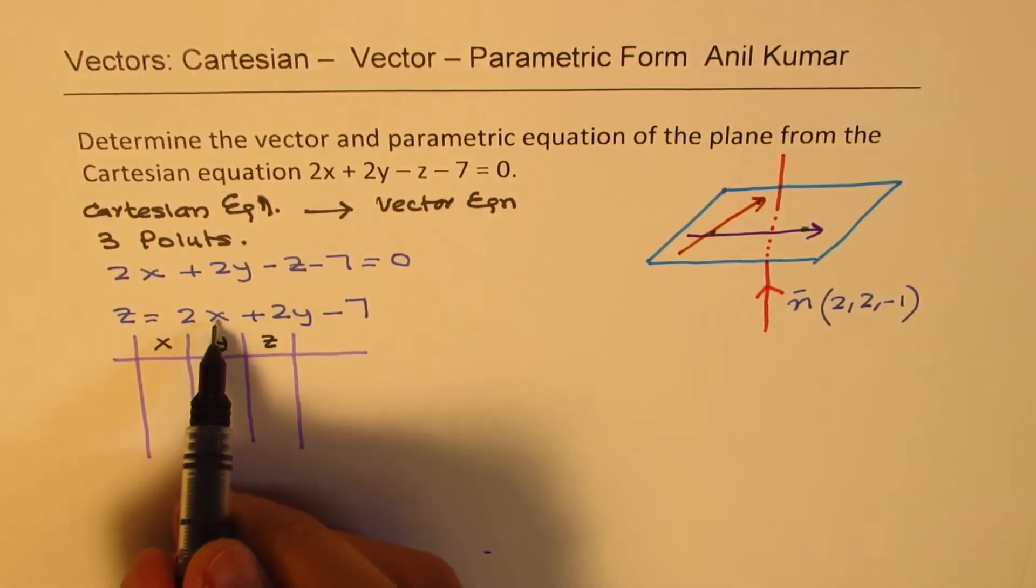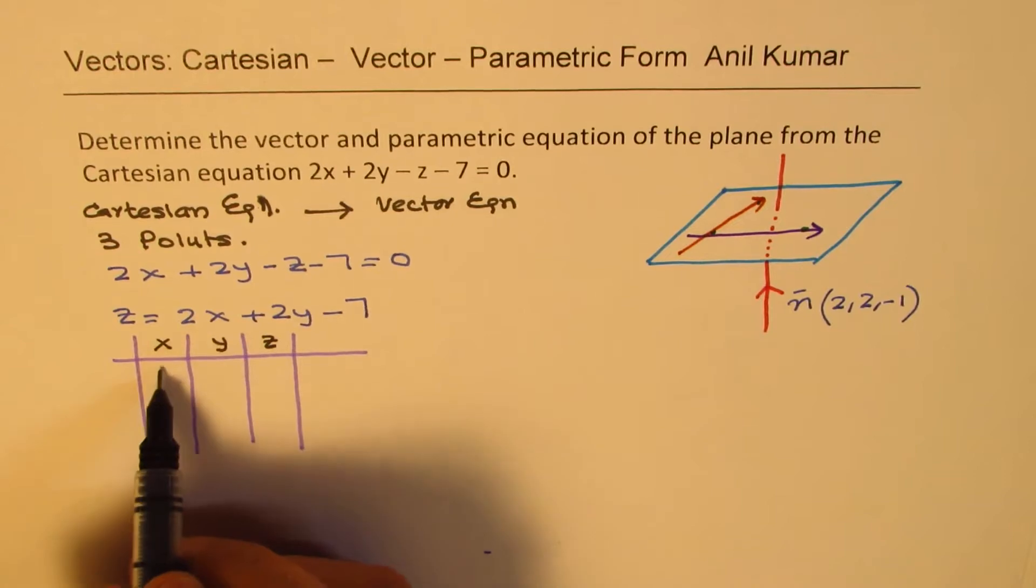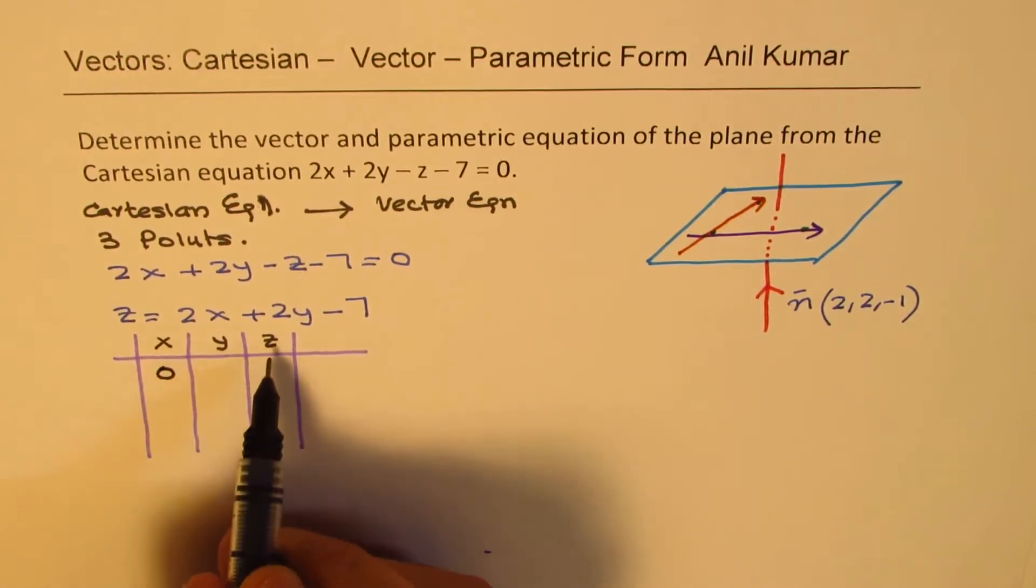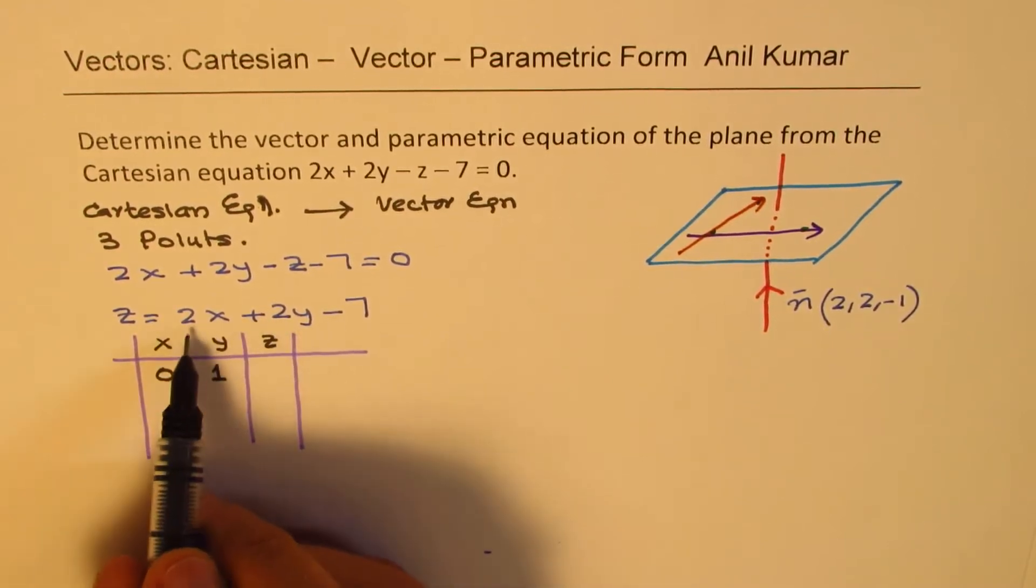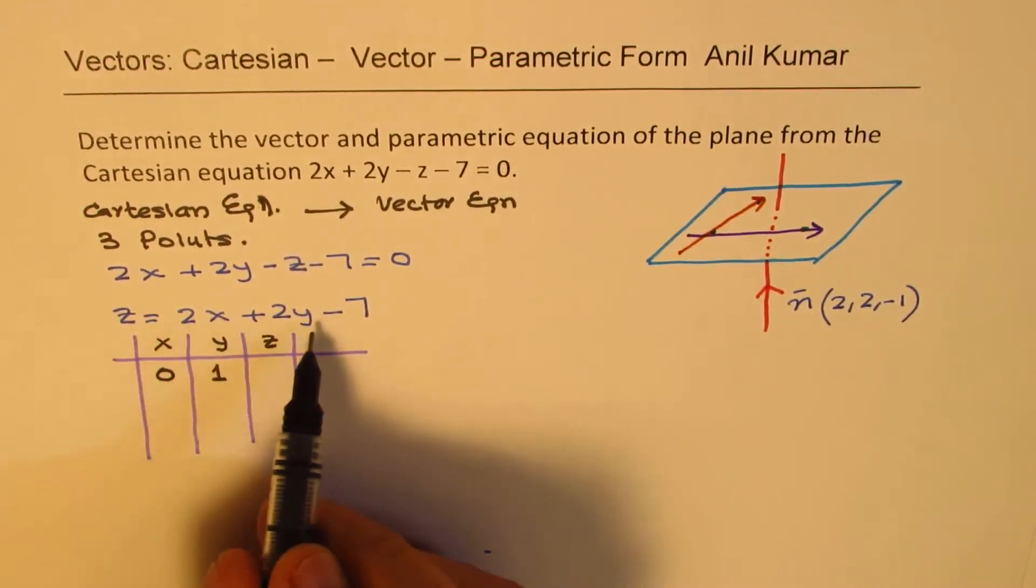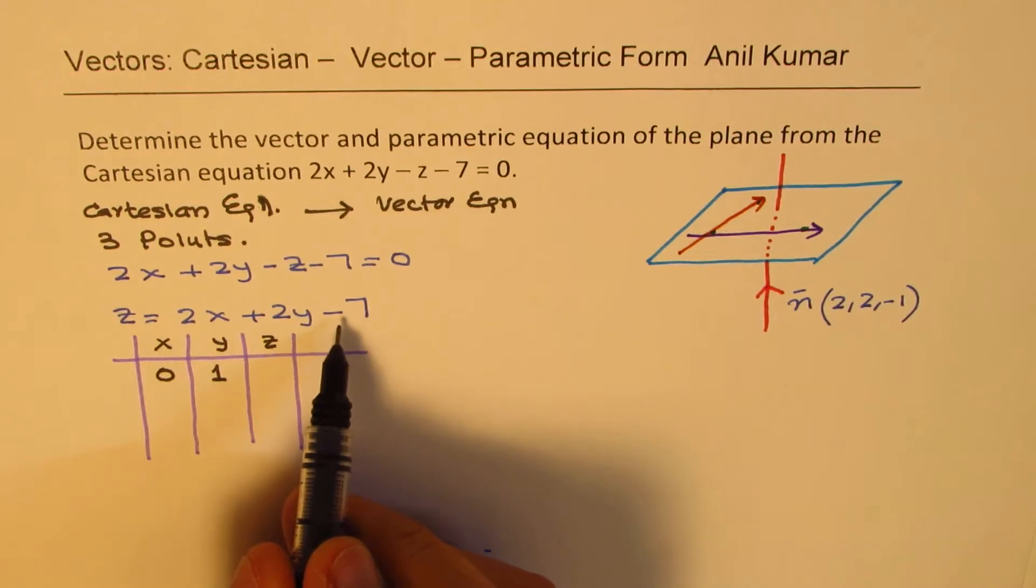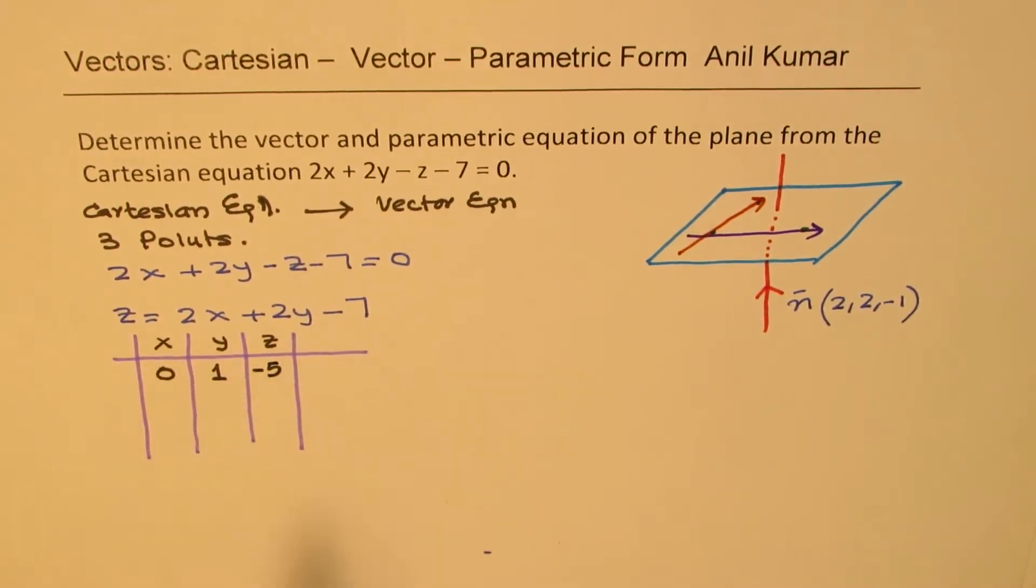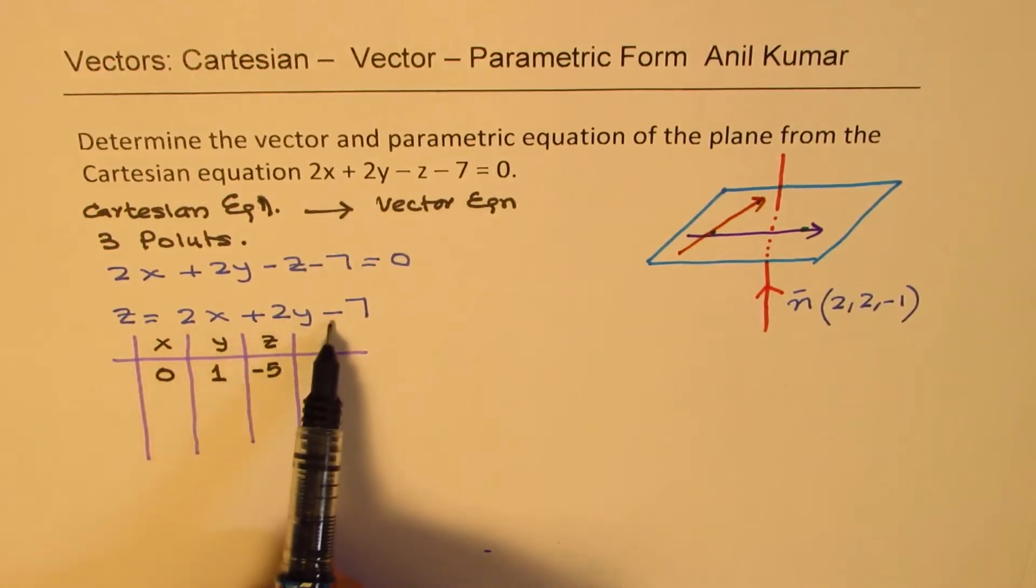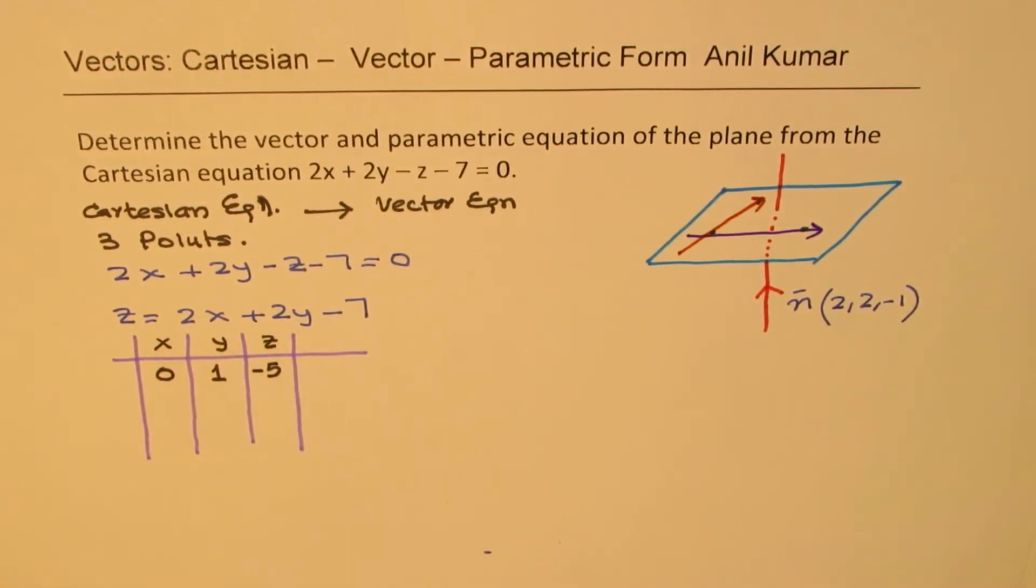So, here, if I write a value, let us say 0 for x, and let us say 1 for y, in that case, z will be equals to, this is 0, and that is 1, so it is minus 5. So, just substitute the values here and get your z value. So, that becomes first point for us.